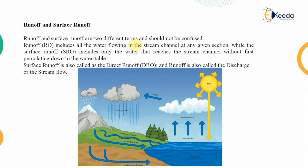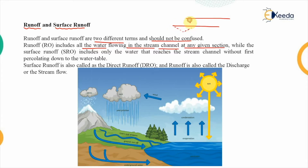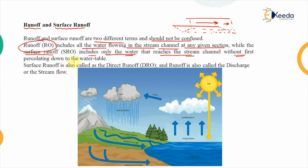First we'll study about runoff. There are two terms: runoff and surface runoff. These two are different terms and should not be confused. Runoff includes all the water which is flowing in the stream channel at any given section. Surface runoff includes only that water that reaches the stream channel without first percolating down to the water table.